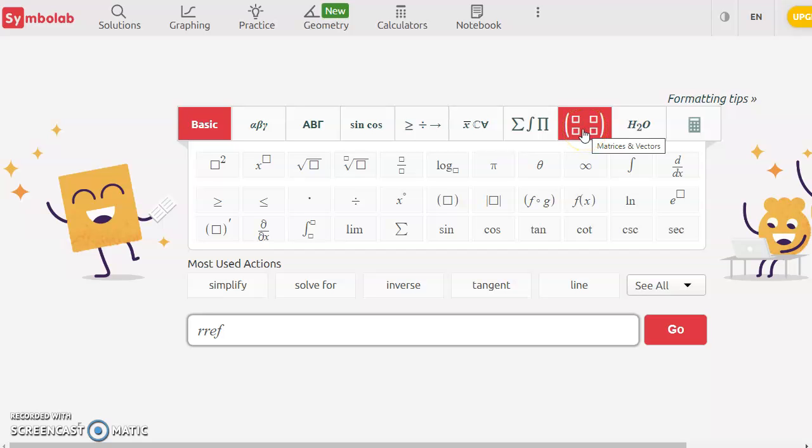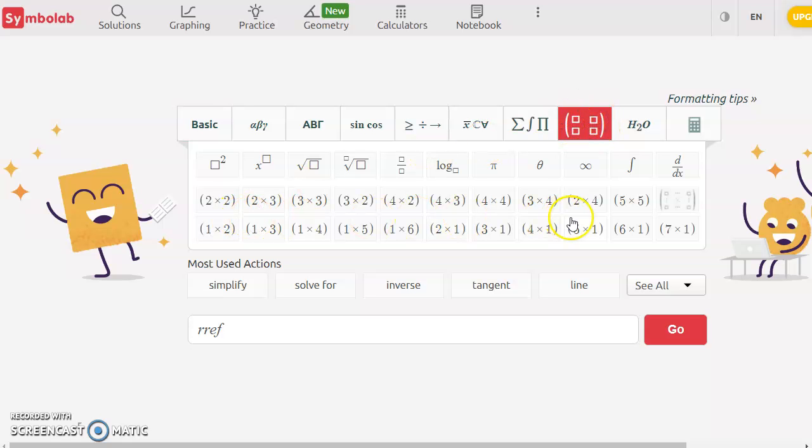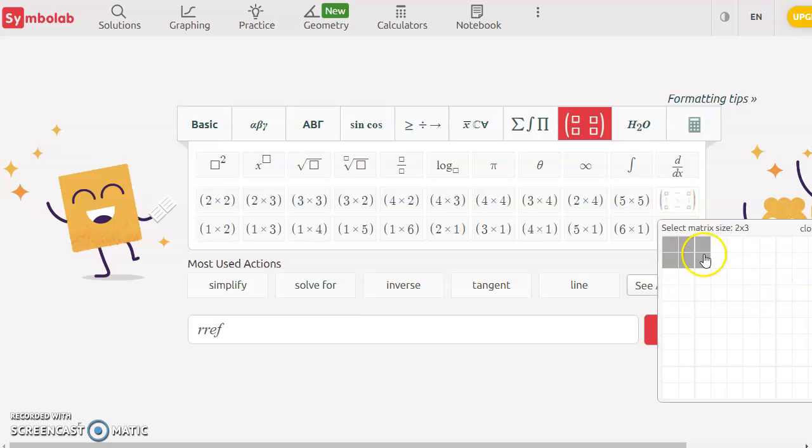We need to give it the matrix we want to reduce. To do that, we can click on the matrix tab here and tell it the size of the matrix we need. If the size you need isn't listed, you can click this button to make a different size. We had a 3x3 system with 3 variables and 3 equations, which will be augmented to become 3x4. So we can just click the 3x4 button here to get the matrix that we need.